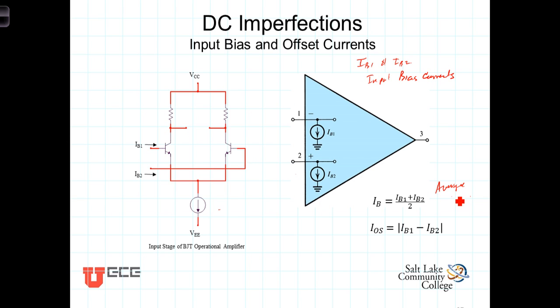A third quantity of interest is known as the input offset current. It is simply the magnitude of the difference between these two currents, so we're not worried about sign here.